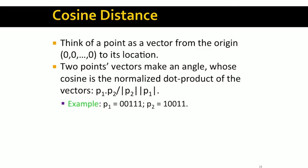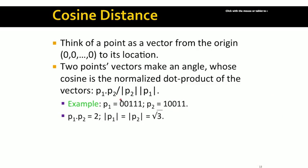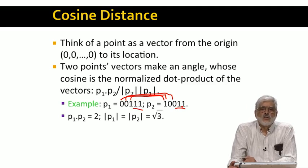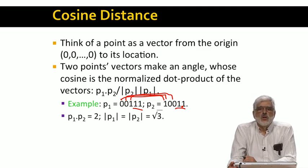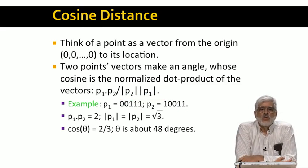The dot product is the sum of the products of the corresponding components, and the length of a vector is the L2 norm — the square root of the sum of the squares of the components. For example, for vectors p1 and p2, the dot product is two: the products of the first three components are zero (0×1=0, 0×0=0, 1×0=0), but in the last two components each vector is one, so the dot product is 1×1 + 1×1 = 2. p1 has three ones, so its length is the square root of three, and likewise for p2. Thus, the cosine of the angle between p1 and p2 is two divided by three, and the angle is about 48 degrees.